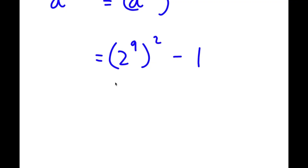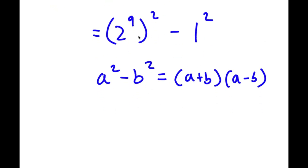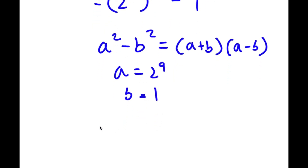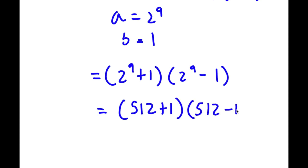Using the difference of squares formula, a squared minus b squared equals a plus b times a minus b, and rewriting 1 as 1 squared, we have 2 to the power of 9 squared minus 1 squared. With a equals 2 to the power of 9 and b equals 1, this becomes 2 to the power of 9 plus 1, times 2 to the power of 9 minus 1. Since 2 to the power of 9 equals 512, I have 512 plus 1 times 512 minus 1, which is 513 times 511.